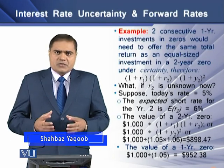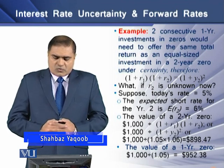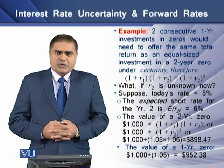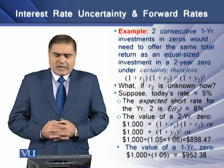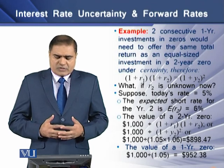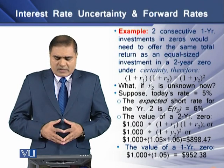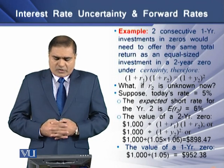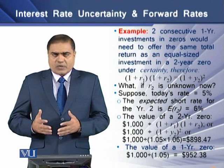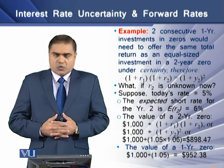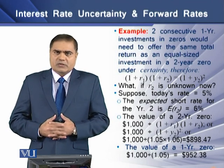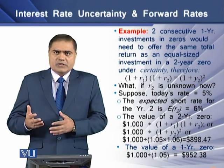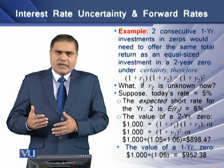To understand this issue, we have an example where two consecutive one-year investments in zero would need to offer the same total returns as an equal-sized investment in a two-year zero under the certainty world. Therefore, 1 plus R1 multiplied by 1 plus R2 should be equal to 1 plus Y2 squared, where Y2 is the yield at maturity at the end of year 2.